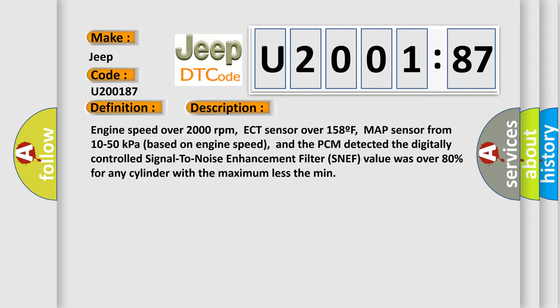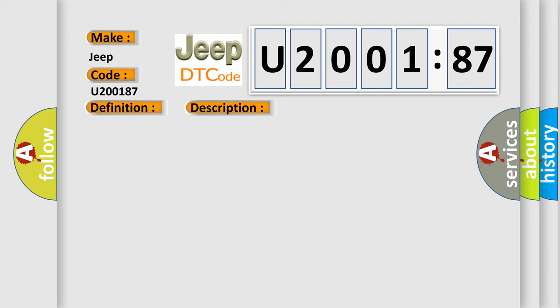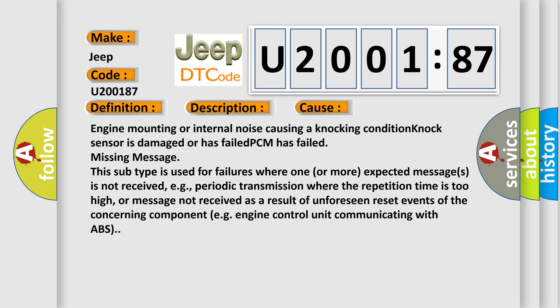This diagnostic error occurs most often in these cases: Engine mounting or internal noise causing a knocking condition, knock sensor is damaged or has failed, PCM has failed, or missing message. This subtype is used for failures where one or more expected messages is not received, e.g., periodic transmission where the repetition time is too high, or message not received as a result of unforeseen reset events of the concerning component, e.g., engine control unit communicating with ABS.